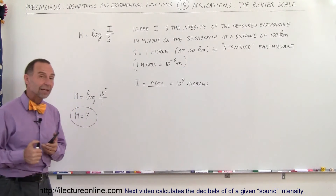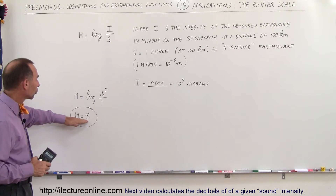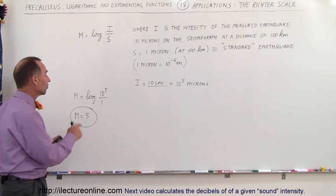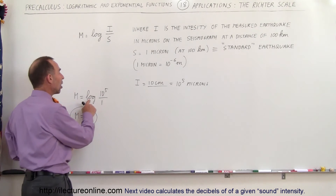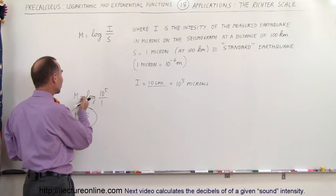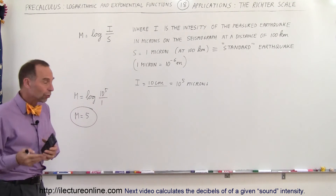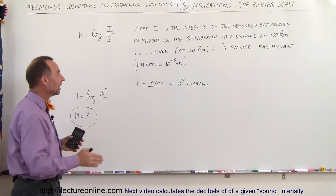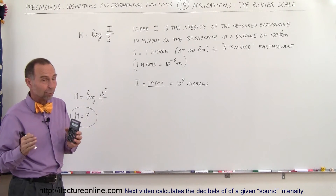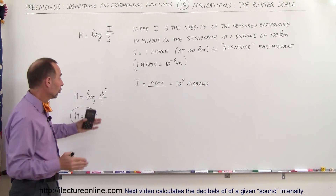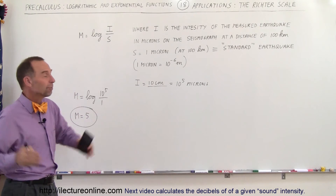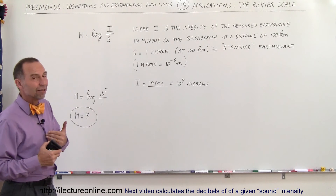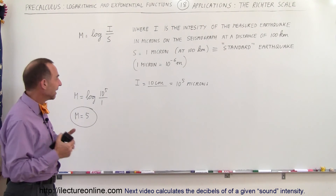Now notice: if we have a magnitude 6 earthquake, the ratio would be 10 times greater — we'd have the log of 10 to the sixth, giving us 6. For a magnitude 7 earthquake, the ratio would be 10 to the 7th. You can see that the seismograph measurements become quite large: 10 to the 6 is 1 meter measurements, 10 to the 7 is 10 meter measurements.